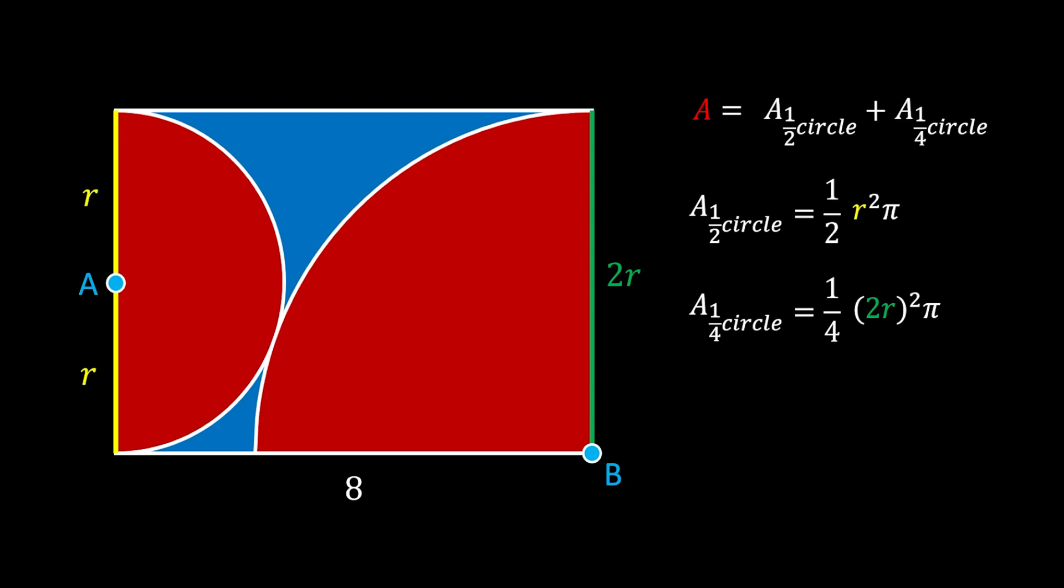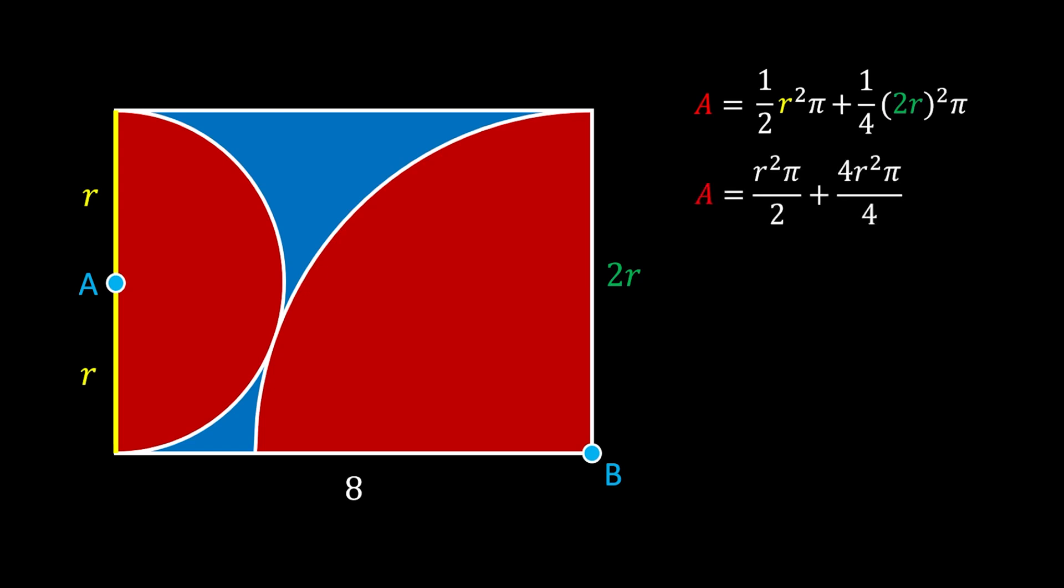Now we can substitute those values in our first equation and we will get that the red area is equal to 1 over 2 r squared π plus 1 over 4 quantity of 2r squared π. Now we can work through this equation. We can first simplify it as following. Then you can notice that we can simplify the second term with 2 in order to get the common denominator. Now we can add these two terms together and get that the red area is equal to 3r squared π over 2.